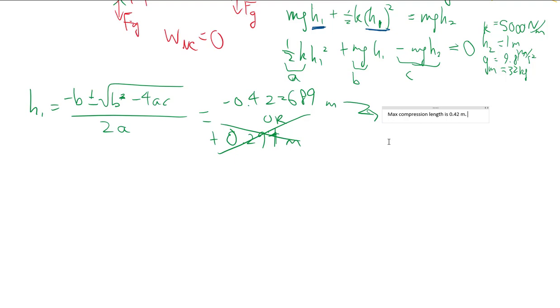Now of course it's possible for the trampoline to be compressed a little less if some of that energy were to have been made up by the chemical energy coming from the jumper's muscles as they contract. But we're told to ignore that in this case.